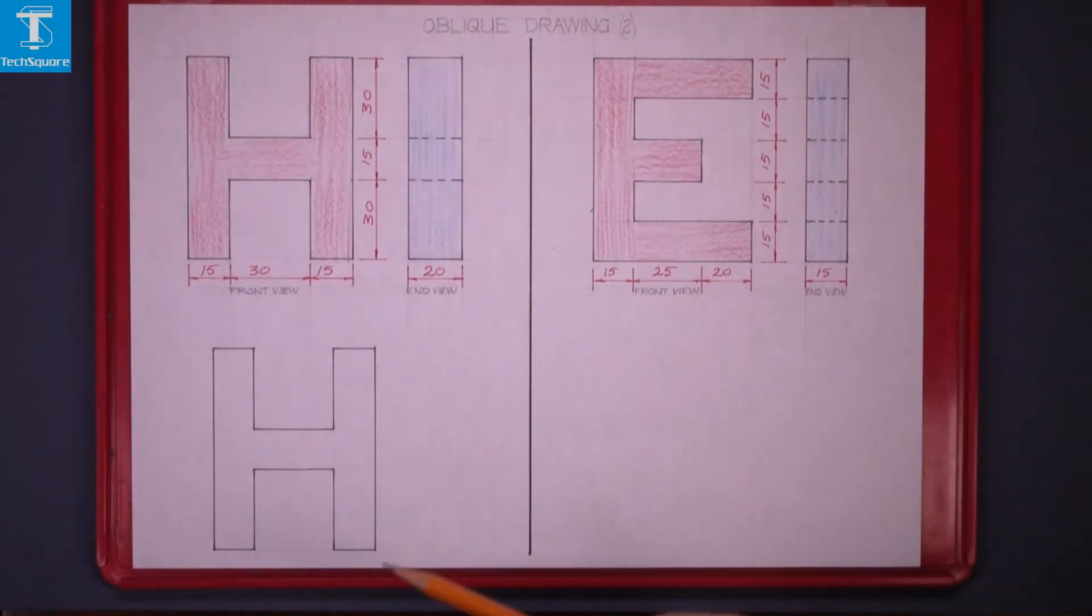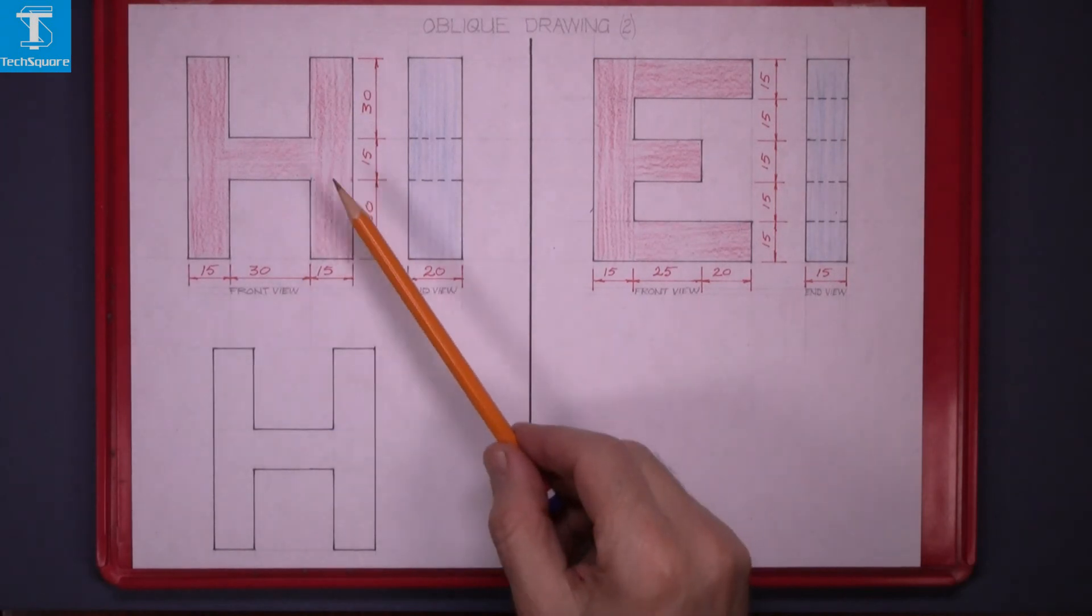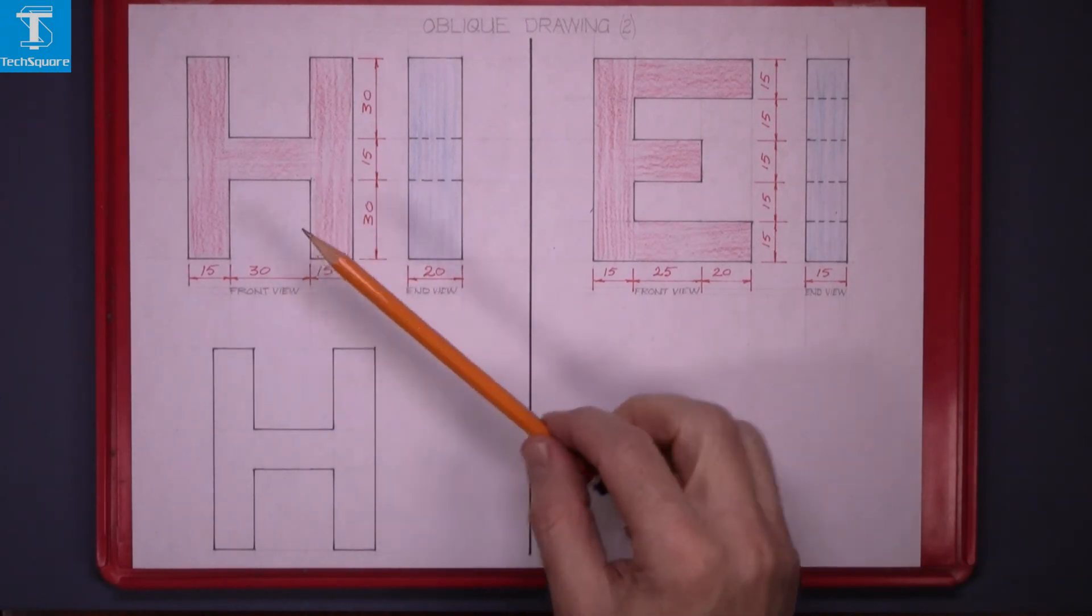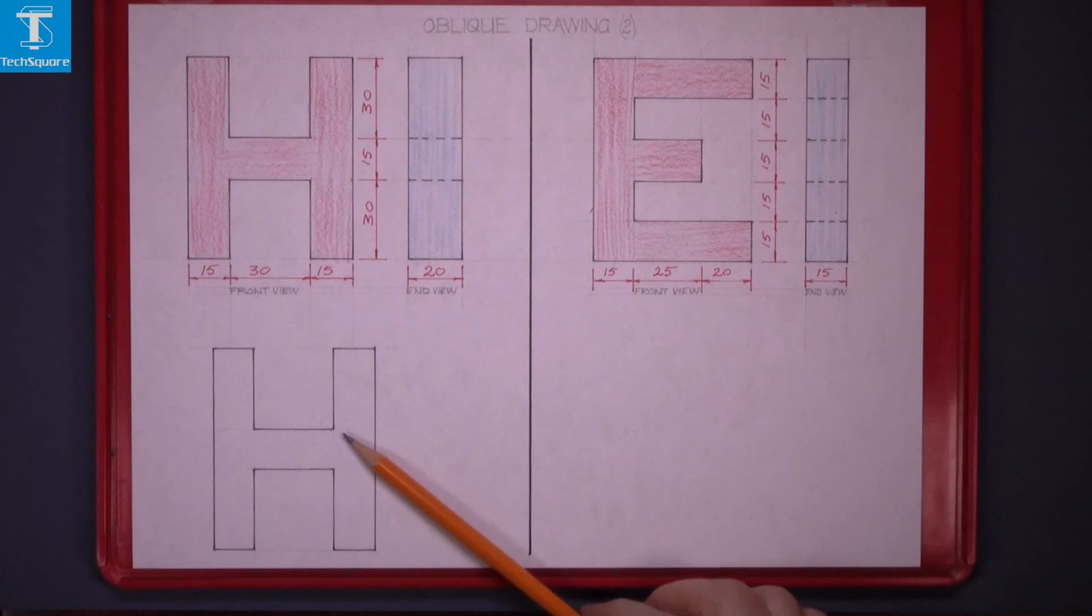Oblique drawing 2. Now we're working on the letter H. I've drawn the front of it down below here.